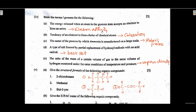Answers: A is electron affinity; B is catenation; C is Haber's process for ammonia manufacturing; D is basic salt — a type of salt formed by partial replacement of hydroxyl radical. If it were hydrogen ion replacement, it would be an acid salt. E should be vapor density or relative vapor density.